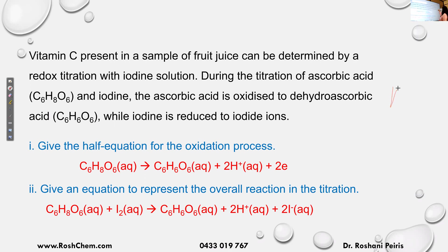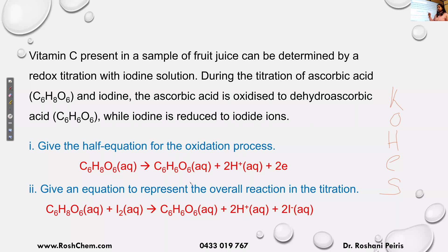Write K-O-H-E-S. K stands for key element — carbon is the key element here, so you have six carbons on each side, that's balanced. O means oxygen — you have six oxygens on each side, that's also balanced. If the oxygens are balanced, you don't need to add water. H means hydrogens — to balance hydrogens, we use H plus.